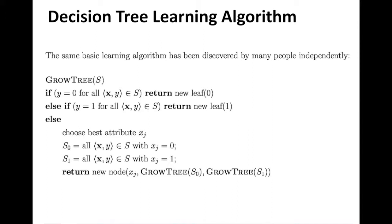The second condition is the else-if where Y equals one. We are considering a binary prediction problem so we have only zero and one. Similarly, if Y equals one for all data instances in the set passed to this GrowTree call, then you return a new leaf node and label it one. This concludes the stopping criteria.